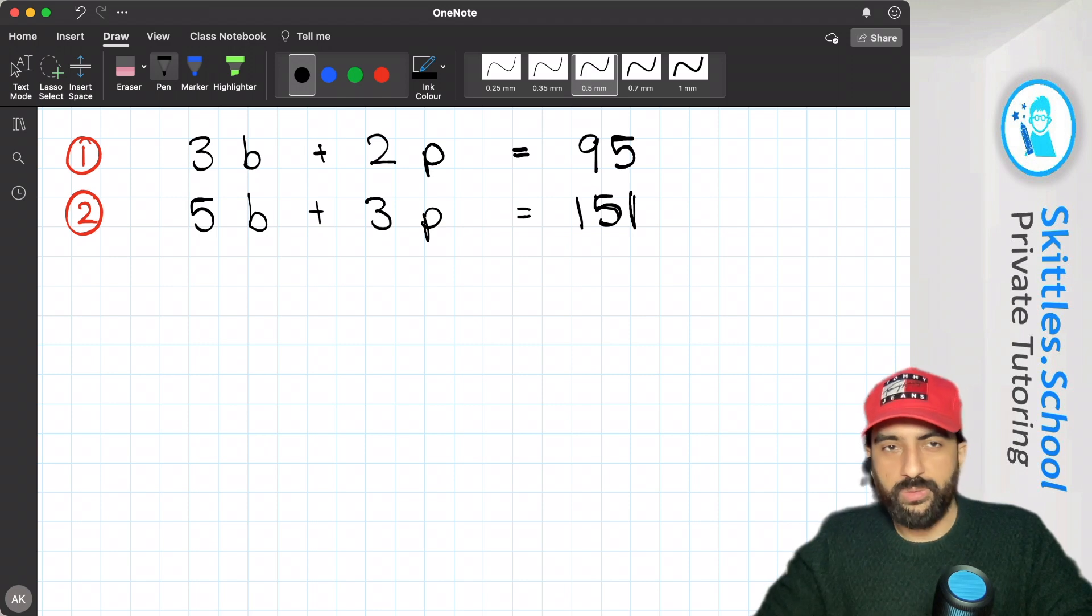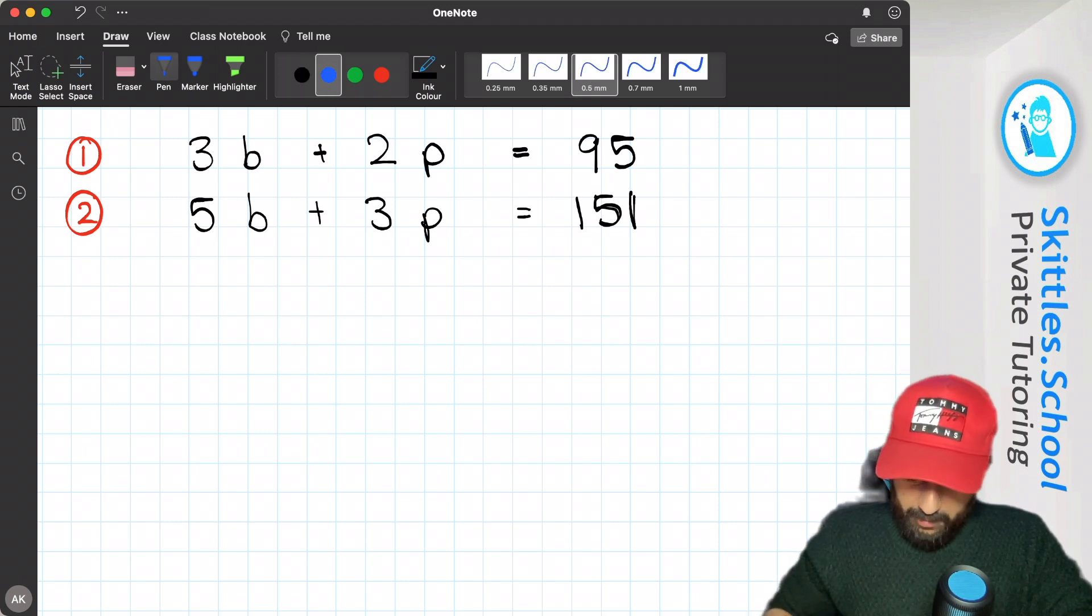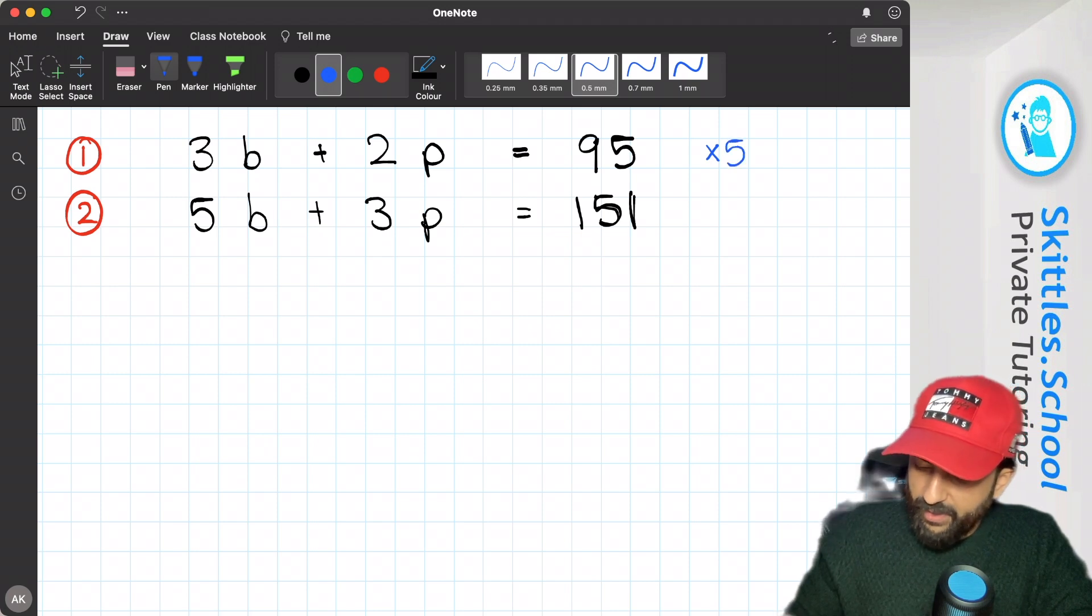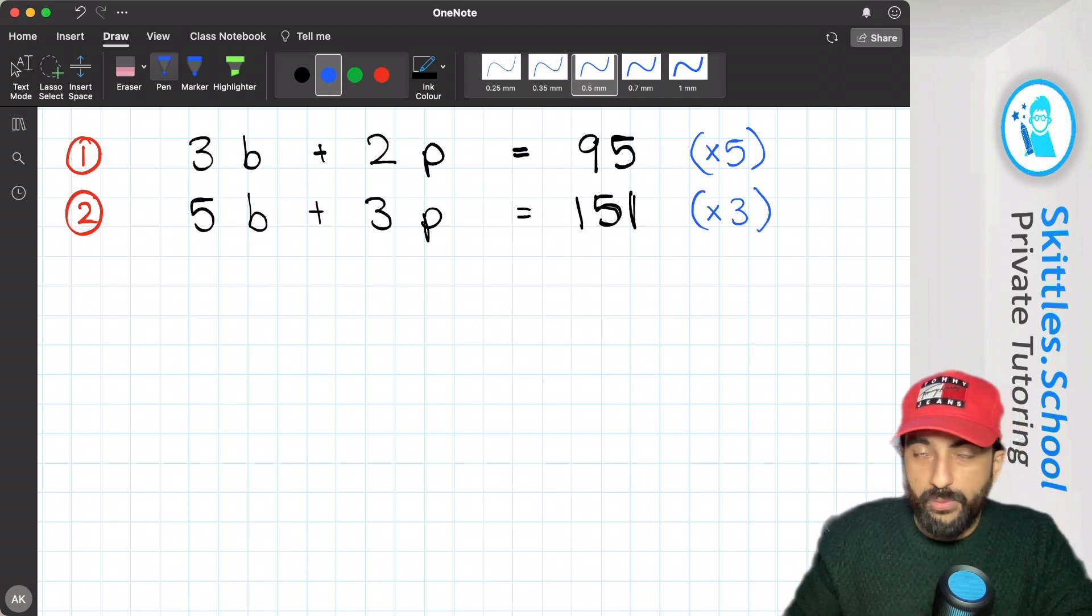So now we've got our two equations and I'm going to use elimination method to work them out. So we need to make one of the numbers in front of one of the letters the same. So if I was to multiply the first one by 5 and the second one by 3, that would make the number in front of the B, both of them would be 15.